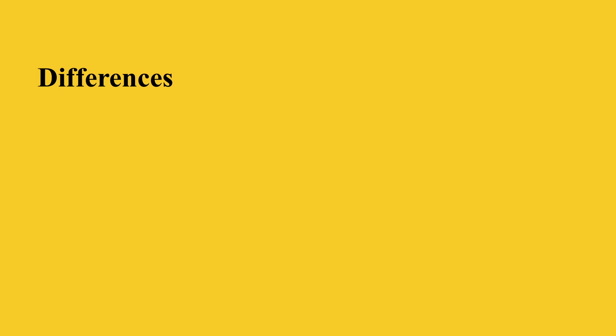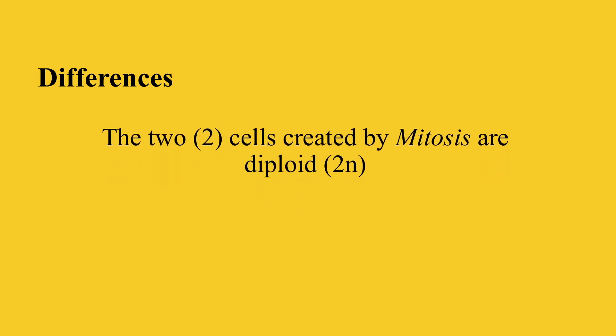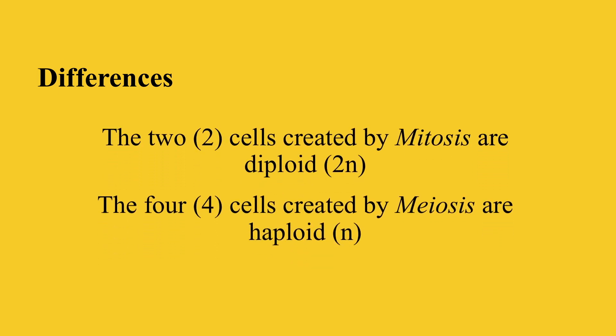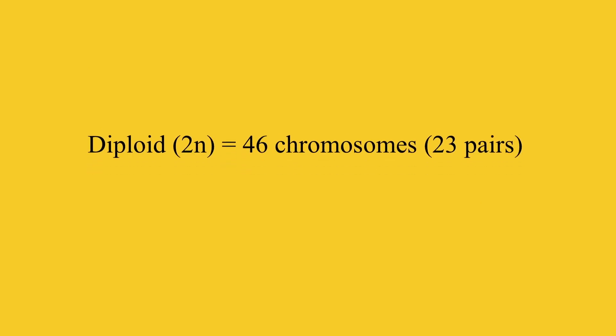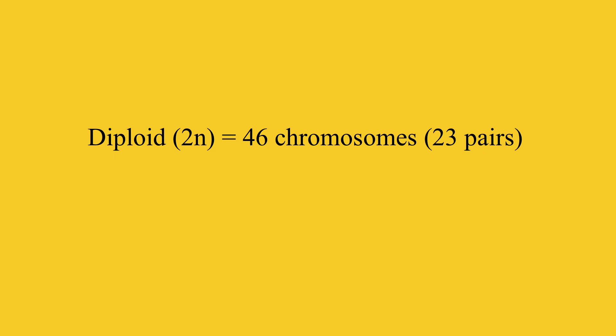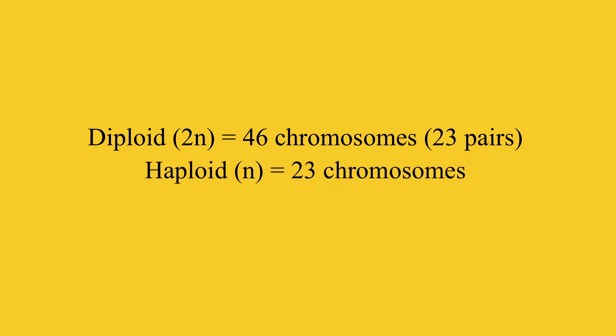The two cells created by mitosis are diploid while the four cells created by meiosis are haploid. As a reminder, diploid cells have 46 chromosomes — 23 pairs — while haploid cells have 23 chromosomes.